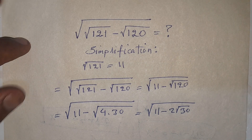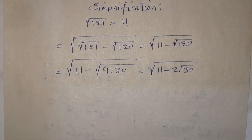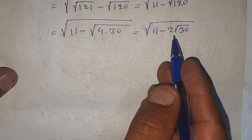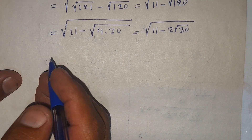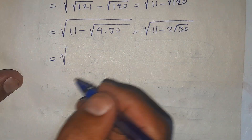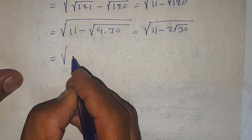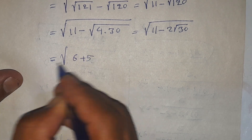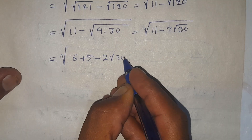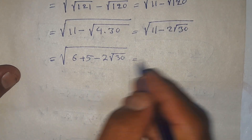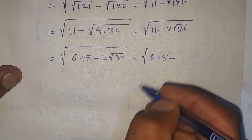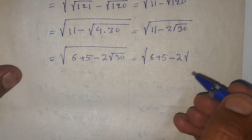Now, instead of 11 we can write 6 plus 5. So this becomes square root of 6 plus 5 minus 2 times square root of 30.